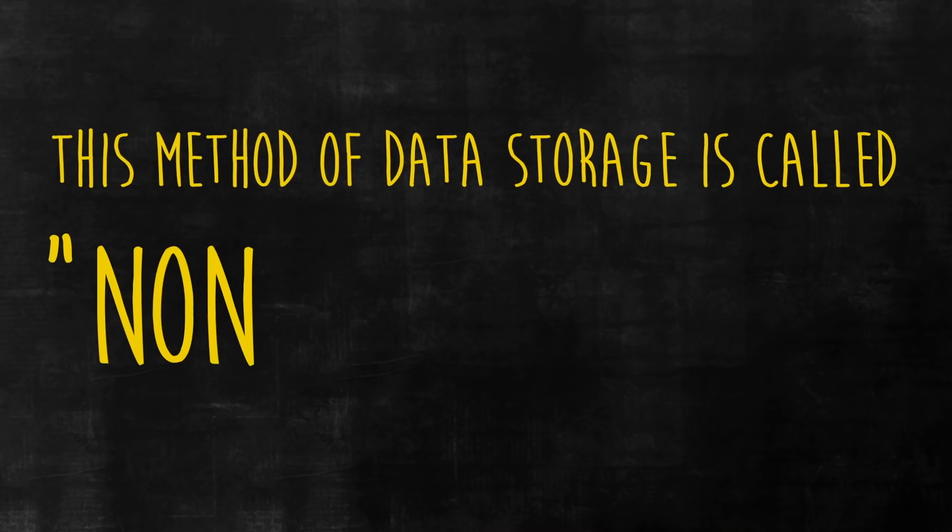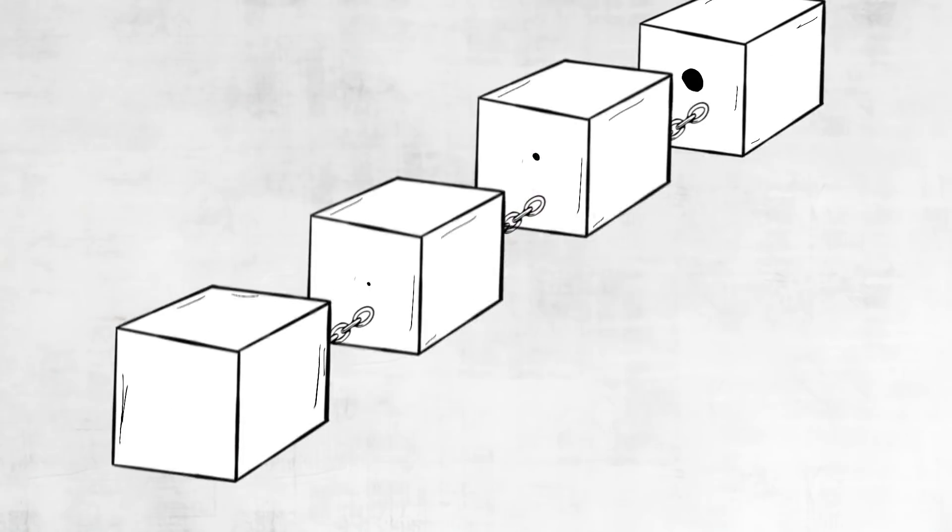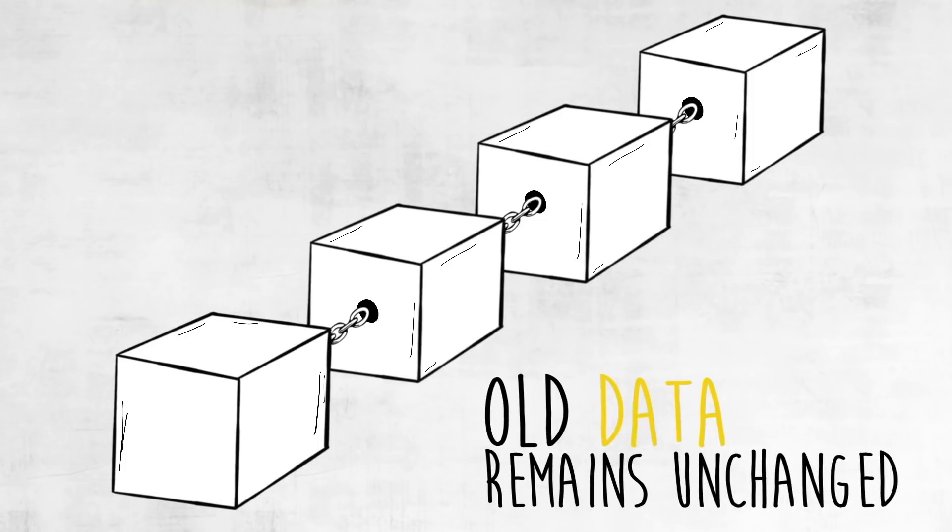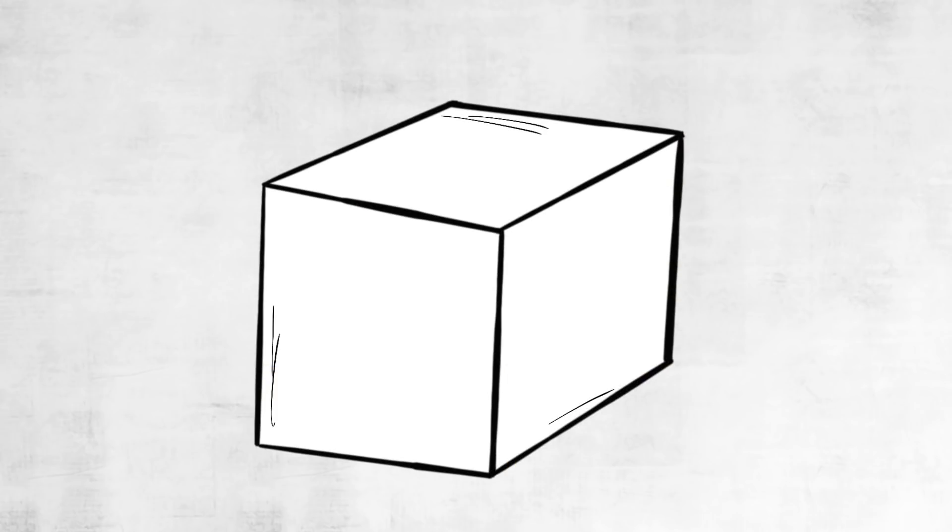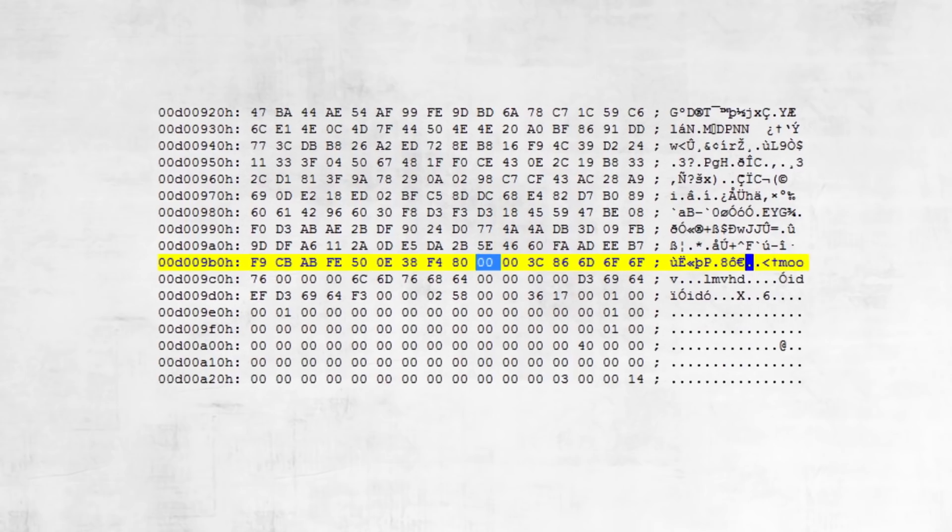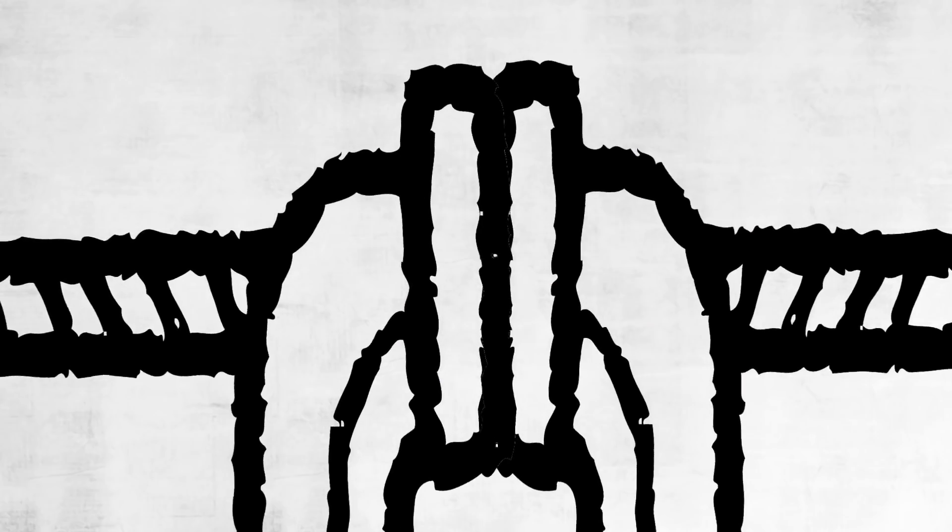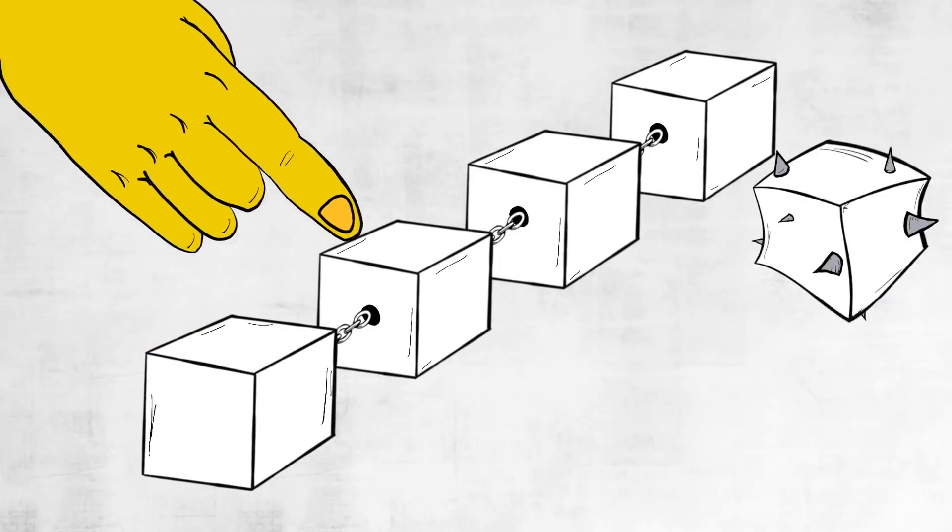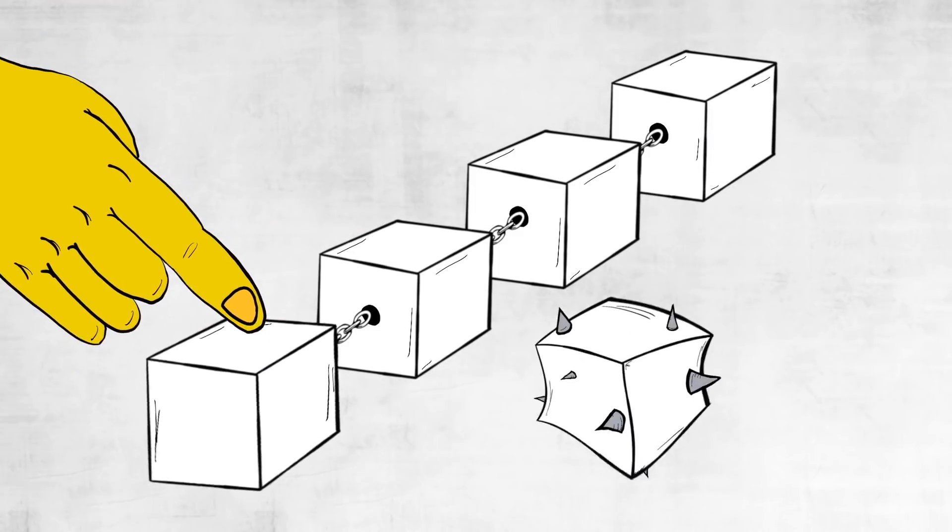This method of data storage is called non-destructive, meaning old data never gets erased or overwritten because the previous blocks in the chain remain unchanged. Each new block that is written contains something called a cryptographic hash, a small mathematical fingerprint of the blocks that came before it in the chain, making it extremely difficult to tamper with the data that resides inside the blocks.